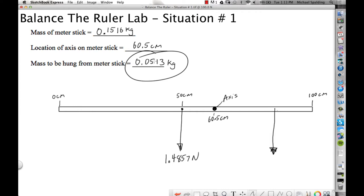This mass is 0.0513, multiply that by 9.8, and we get 0.50274. And don't round these numbers. If you round these numbers, you're going to get rounding error.